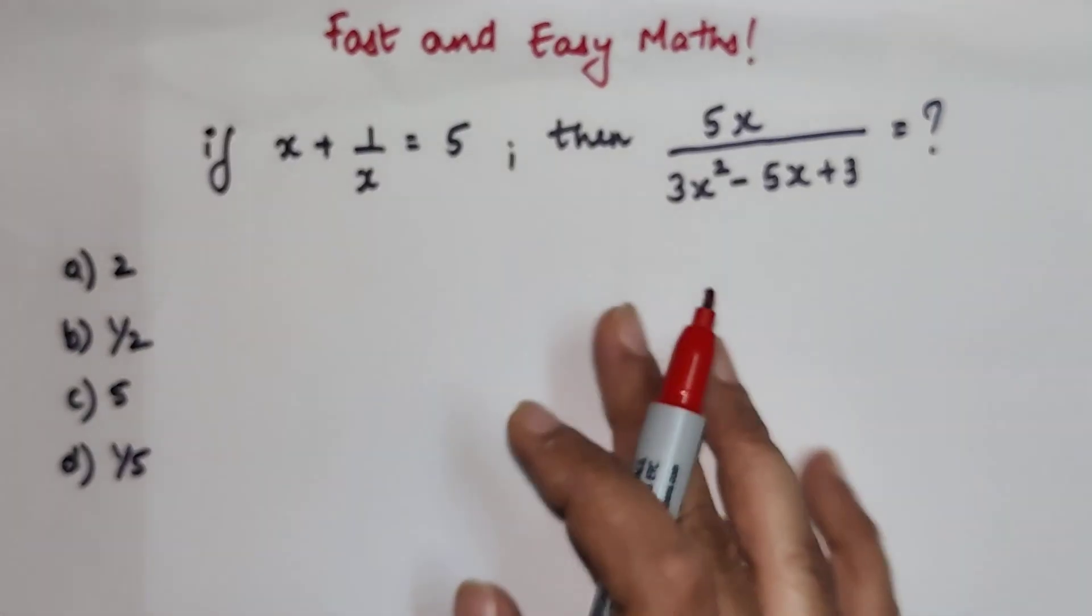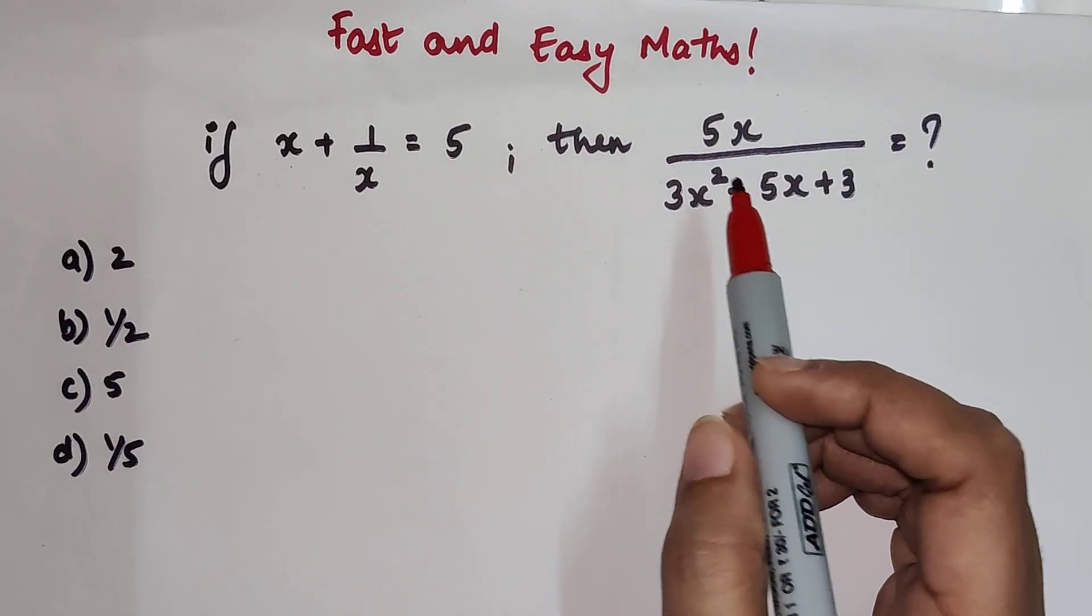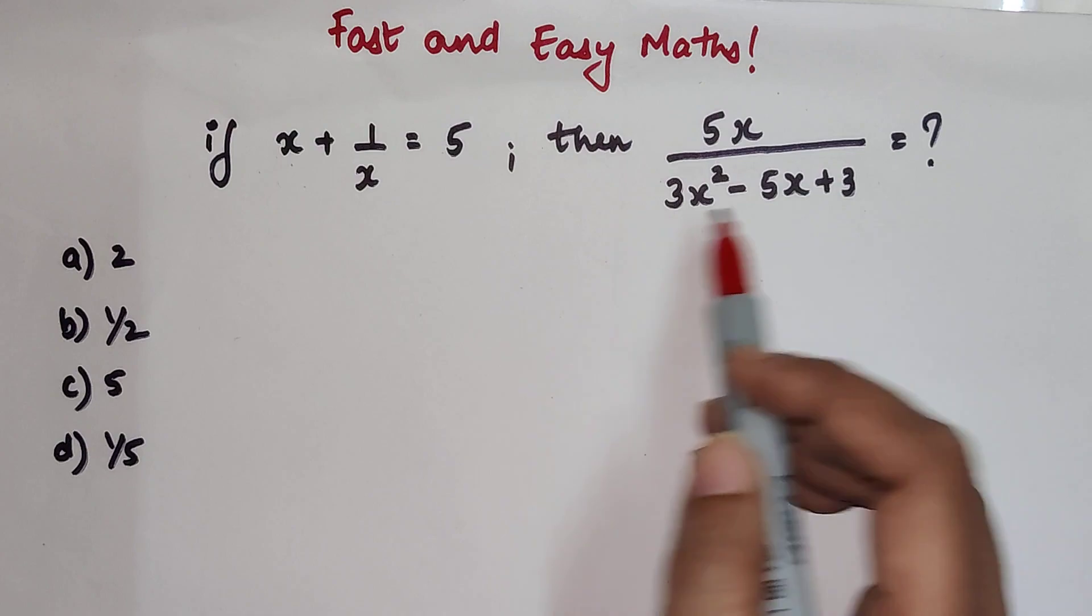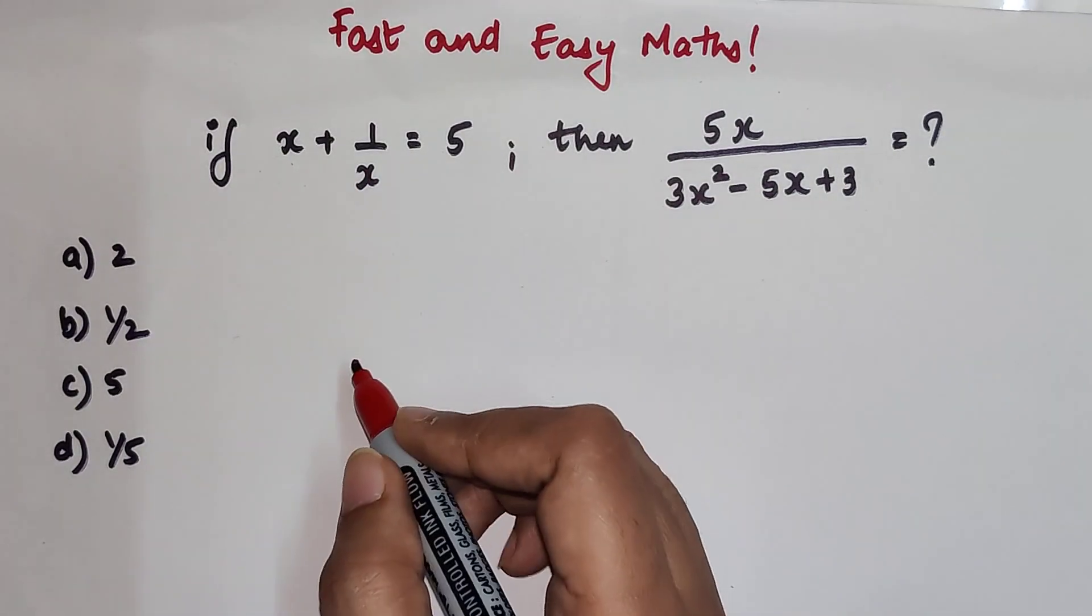In such a case, what you should do always is that you should try to rearrange the denominator in the form of x plus 1 upon x.